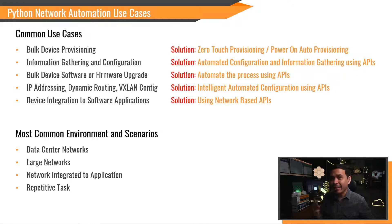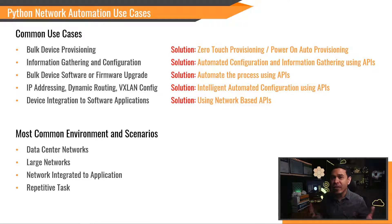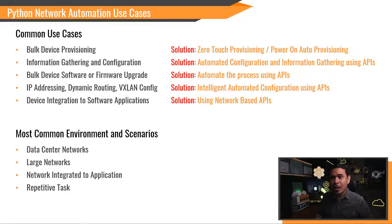Second common scenario: large networks. Network automation is really for large networks in data centers — we're talking about 20, 50, or even hundreds of network devices. Because if you're going to automate just one, two, or five devices, most of the time it's much easier to do everything manually. Last: repetitive tasks — creation of VLANs, shutting or un-shutting interfaces, or running show commands is also common.